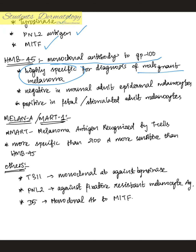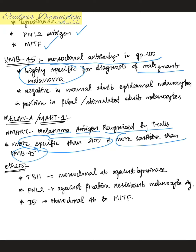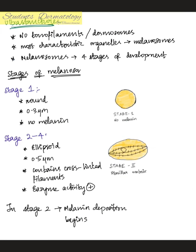Melan-A or MART-1 (melanoma antigen recognized by T cells) is more specific than S100 and more sensitive than HMB45. Other markers include T311, a monoclonal antibody against tyrosinase; PNL2, against fixative-resistant melanocyte antigen; and D5, a monoclonal antibody to MITF.